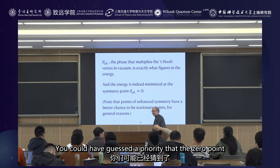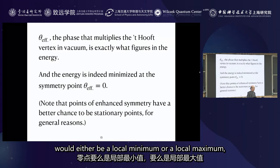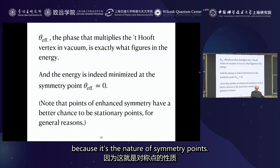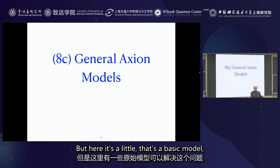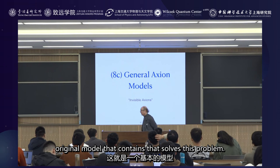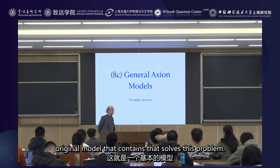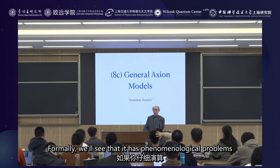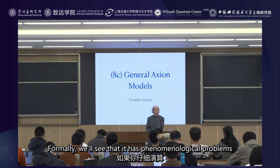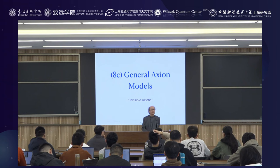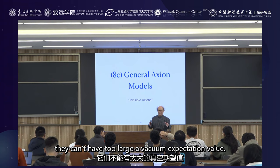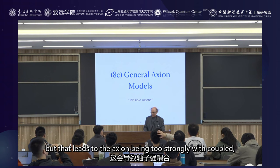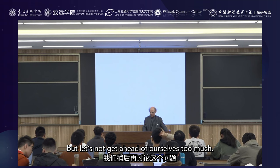This gives an energy that goes like the effective value of the overall interaction — including both quark masses and theta term — which we call alpha, the net phase. It's minus cosine alpha, because we also have the anti-version — the parity and time reversal conjugate — and the energy is minimized at the symmetry point where the effective theta term is zero. The scale is associated with typical QCD scales, roughly QCD to the fourth power — about 100 MeV to the fourth power. So this basic original axion model formally solves the problem, though it has phenomenological problems when you examine it in detail: if you use Higgs fields that violate the weak interaction symmetry they can't have too large a vacuum expectation value, leading to the axion being too strongly coupled.